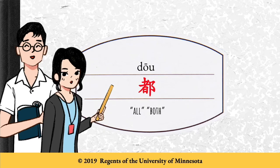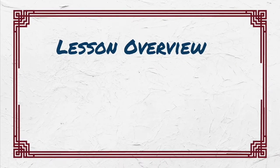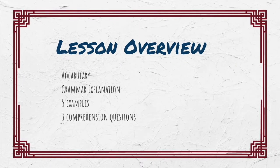大家好。In this lesson, we will introduce 都, which means 'all' or 'both.' This lesson presents active vocabulary, a short grammar explanation, examples, and comprehension questions.